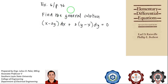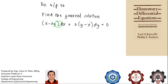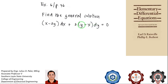We need to check whether the partial derivative of M with respect to y is equal to the partial derivative of N with respect to x. The M term contains x and y variables, and if you differentiate with respect to y, you assume x as a constant, including any whole number constants. If you differentiate N with respect to x, the variable y is assumed constant.